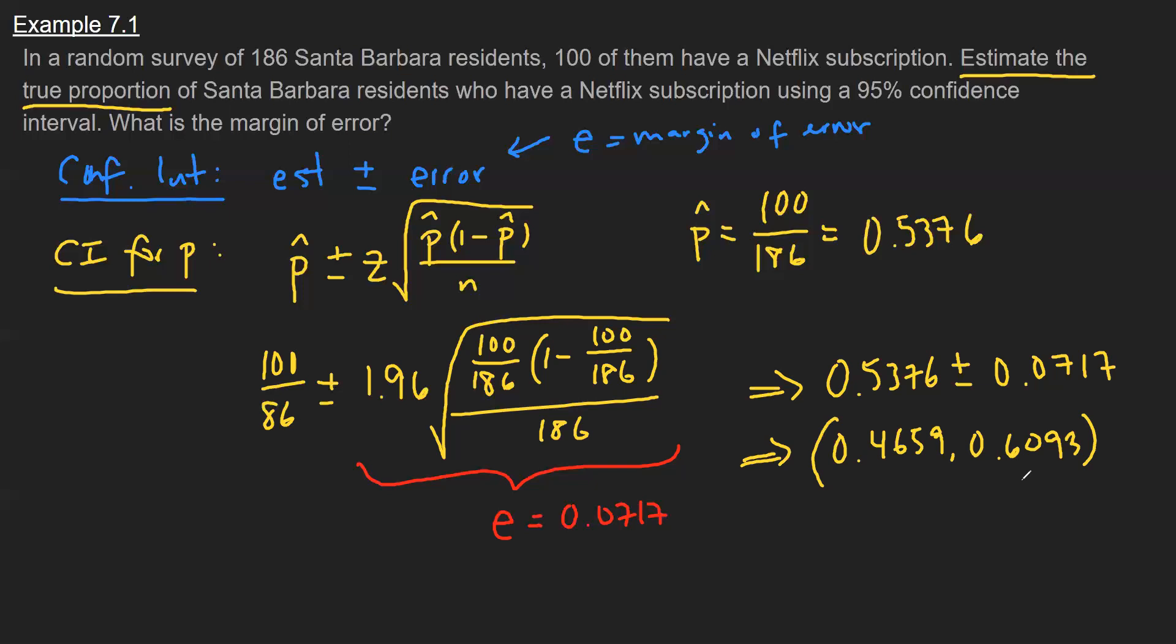So if I want to be 95% sure that I'm estimating the true proportion of Santa Barbara residents, then this interval would provide it for me. That's it.